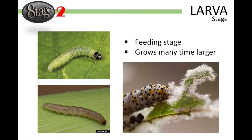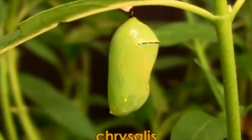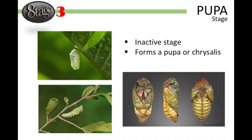Once fully grown, the insect forms itself into a pupa or chrysalis, a kind of vessel in which the insect changes into an adult. They usually do this on twigs or safe hidden areas around the host plants. The pupa stage may last a few weeks to several months depending on the species. During this time, a hardened case forms around the pupa to protect it from predators and extreme weather conditions. And inside, the tissue, limbs, and organs of the insect transform.